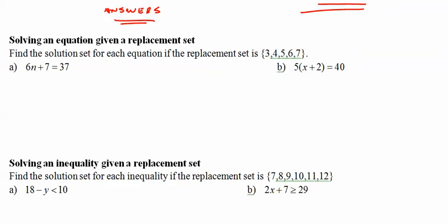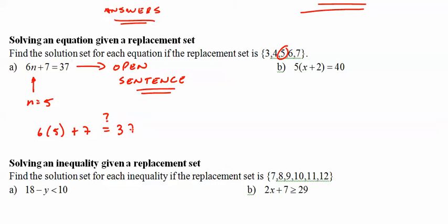So here's your replacement set possible answers, but the solution set is the one that works. So we try them all, and it turns out, if I make n equal to 5, I pull this one out. Then 6 times 5 plus 7 equals 37. That works. My solution is n equals 5.